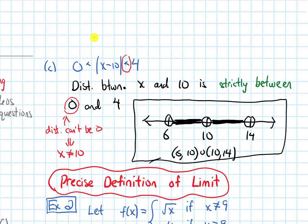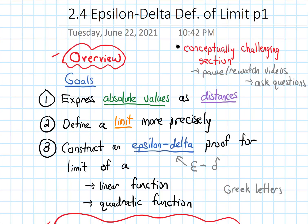When we have the inequality 0 < |x − 10|, that tells us x is not allowed to equal 10. We can verify this: plugging in 10 gives 0 < 0, which is false, so 10 is excluded from the shaded region. In terms of our goals for this section, we've finished goal 1 — expressing absolute values as distances. This was a bit of review from algebra, and we're going to use it now to define a limit more precisely.